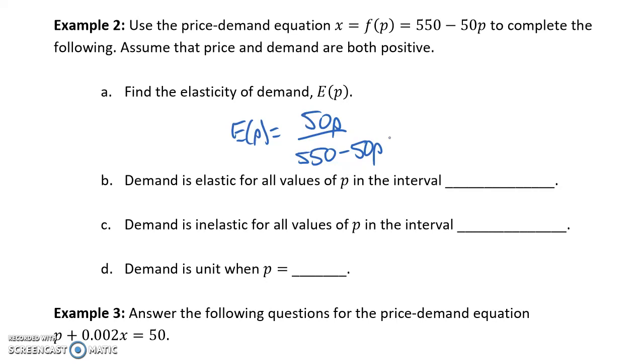In parts b, c, and d, what we want to do is determine for what values of p our demand is elastic, inelastic, or unit. So, depending on the price point that we enter, when would we get a value that's greater than 1, because that would be elastic demand. When would we get a value that's between 0 and 1, because that's when demand would be inelastic, and when would we get an elasticity of exactly 1, meaning our demand is unit.